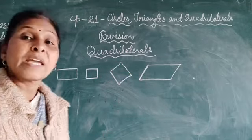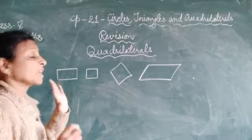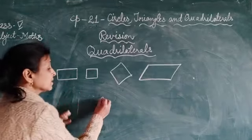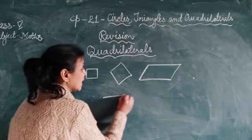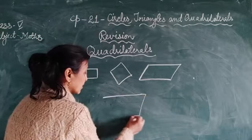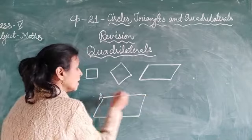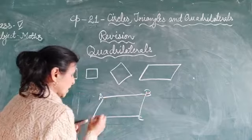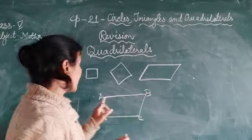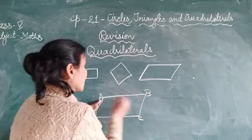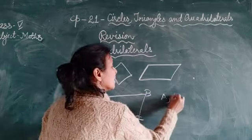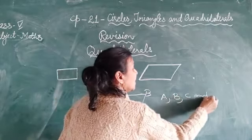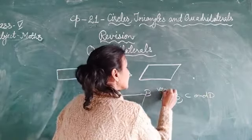It is named by four capital letters: A, B, C, D. It has four vertices: A, B, C and D. These are the vertices.